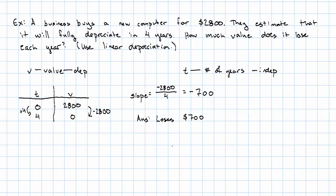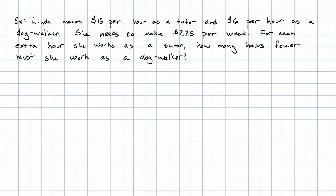Sometimes, though, we don't have a situation that lends itself to seeing the slope immediately. For example, suppose Linda makes $15 per hour as a tutor and $6 per hour as a dog walker. She needs to make a total of $225 per week. For each extra hour she works as a tutor, how many hours fewer must she work as a dog walker?